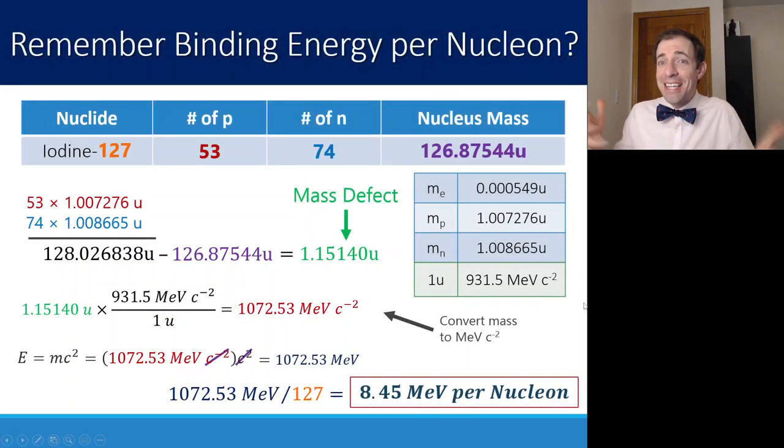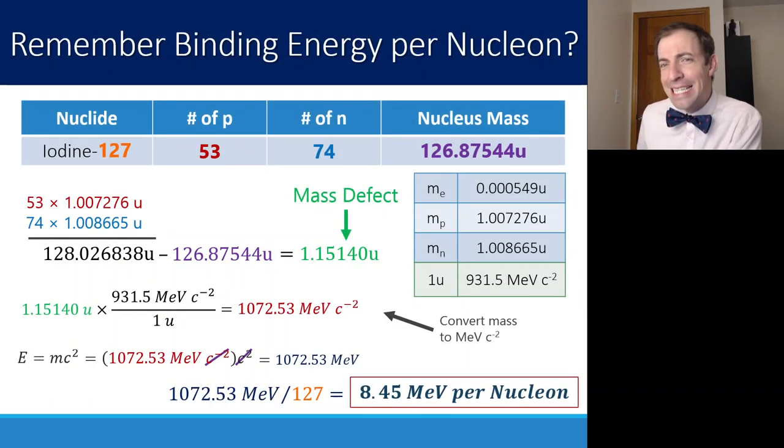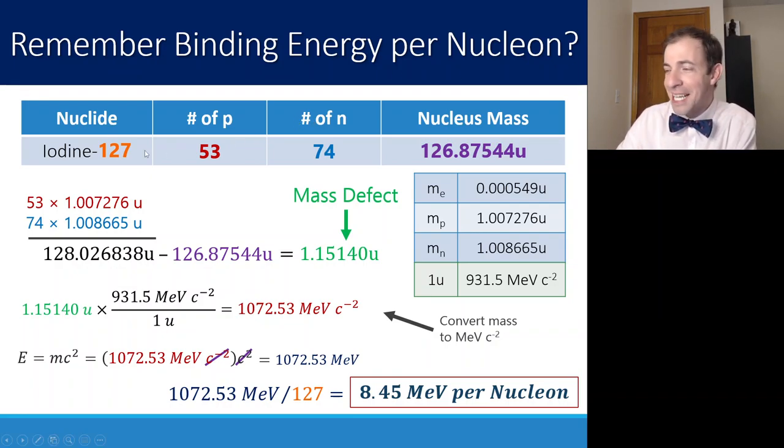To start us off, let's remind ourselves about this idea of binding energy per nucleon. Basically, this was the idea of when a nucleus forms, the mass of the protons and neutrons individually is larger than the mass of the nucleus as a whole. That mass didn't just disappear. It was converted into energy. We call this the binding energy. It's the energy stored inside that nucleus. If we were to find the binding energy per nucleon, that's taking that binding energy and dividing it by the number of protons and neutrons total, essentially the mass number.